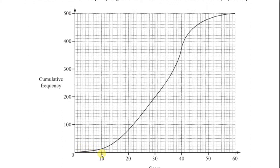For example, this would be the number of people that scored 10 or less. The number of people that scored 10 or less would be just over 10, because each of these intervals are 10 — 10, 20, 30, 40, 50, 60, 70, and so on. That's what the cumulative frequency table basically tells us.